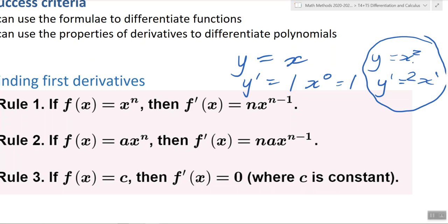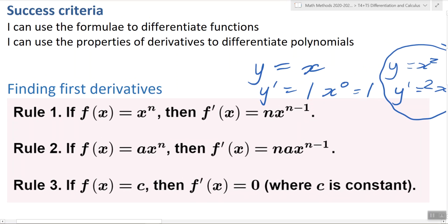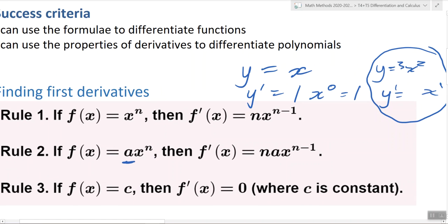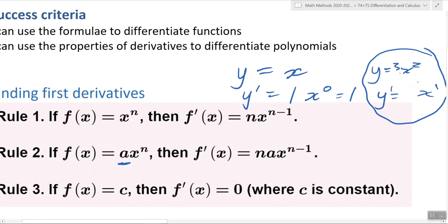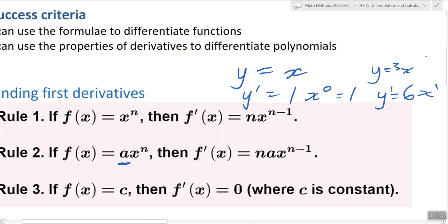Just before we move on — if there's a number already at the front of the function, so if x squared already had, say, 3 at the front, you just multiply that 3 by the old power. So it would become 3 times 2, which is 6. That coefficient out the front, you just multiply it by the power.